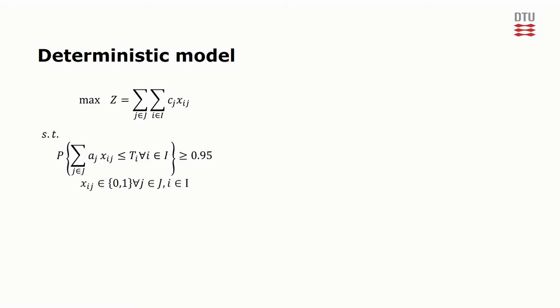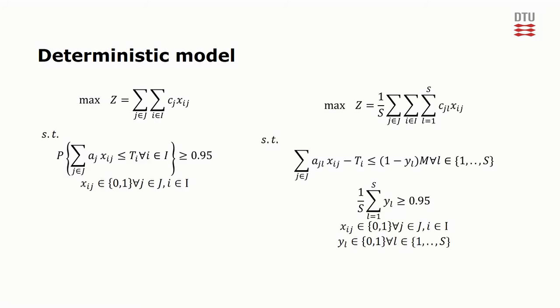To the left we see our stochastic model from earlier, and to the right we see the deterministic approximation of that. We've had to introduce new binary variables, one for each of the samples. Rather than the old chance constraint, we now have this set of constraints that ensure that yl is zero if the solution is infeasible in the lth sample of the parameters. We had to introduce the new parameter m in order to model the y's. m is just a large number. Notice also this new constraint, which ensures that the solution is feasible for at least 95 of the 100 parameter samples.